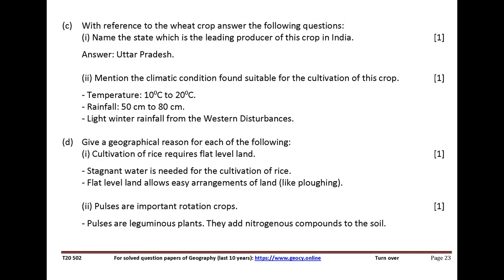With reference to the wheat crop answer the following questions. Name the state which is the leading producer of this crop in India. Answer: Uttar Pradesh. Mention the climatic conditions found suitable for the cultivation of this crop. Temperature: 10 to 20 degrees Celsius. Rainfall: 50 to 80 centimeters. Light winter rainfall from the western disturbances.